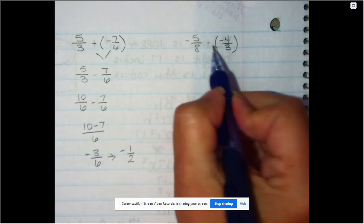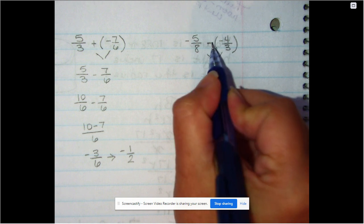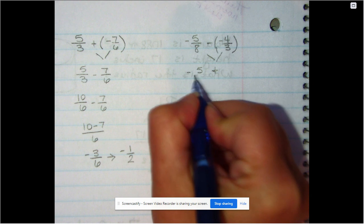Now on this one we have a double sign as well, but it's a negative negative. Well, the opposite of a negative is positive, so we have negative five-eighths plus four-thirds.